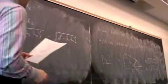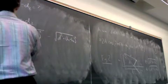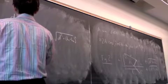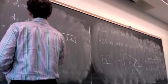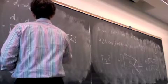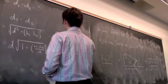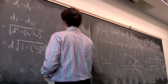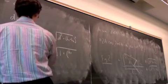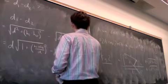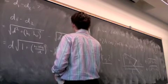Okay, d² plus (hₜ minus hᵣ)² minus d² plus (hₜ plus hᵣ)². Now I'm going to take out d. I'm going to factor out d: d times root of 1 plus (hₜ minus hᵣ)²/d² minus d times root of 1 plus (hₜ plus hᵣ)²/d².